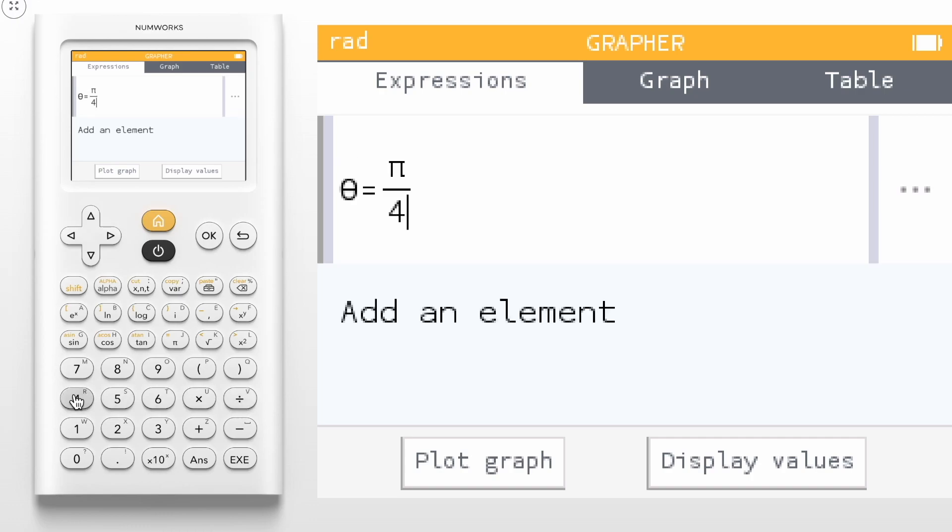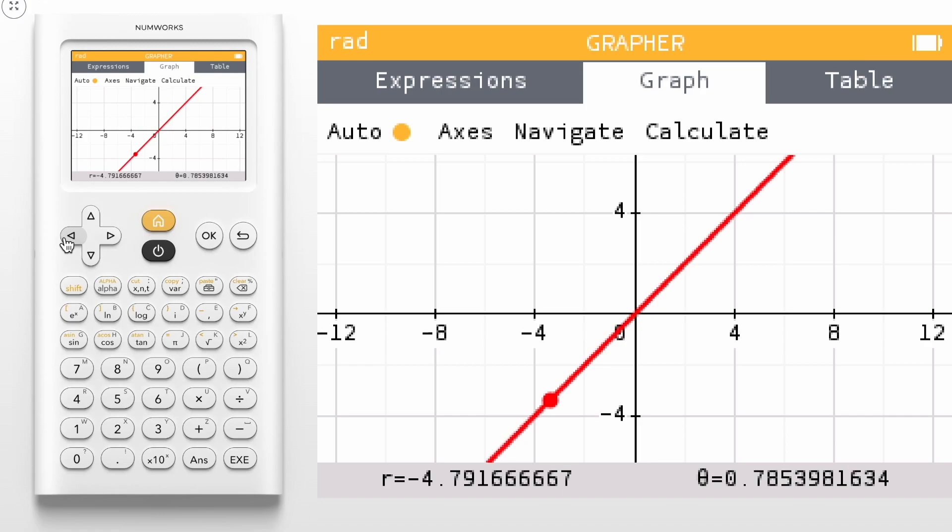You can press Execute or OK to confirm your polar line and navigate down to plot the graph. Immediately, we're tracing the polar line, so you can toggle left and right to navigate through the line.